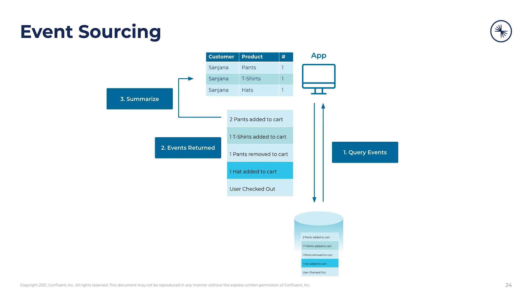We got to see how event sourcing is different from traditional forms of data management, because the source of truth is an event log rather than a table you can mutate. This may seem a little odd — why go to all that trouble? In the next module, we'll explain why storing data in an event-centric form like this is so valuable.